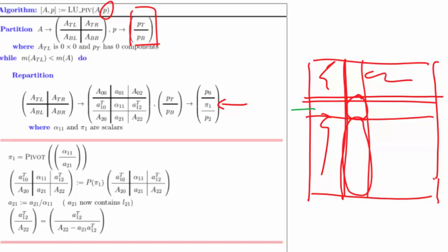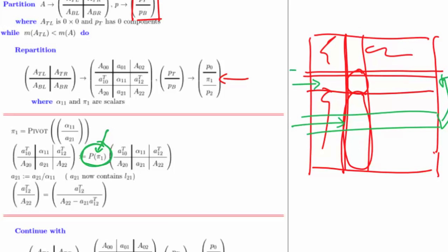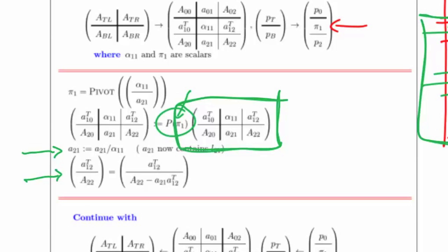Once we've determined with which row we need to swap, we need to permute those two rows, we need to swap those two rows, we need to pivot them, whatever you want to call it. Now that is just a matter of applying the pivot matrix that is determined by this index that we just computed, to this part of the matrix. Once we've done that, we simply proceed exactly as we did before with our LU factorization algorithm.